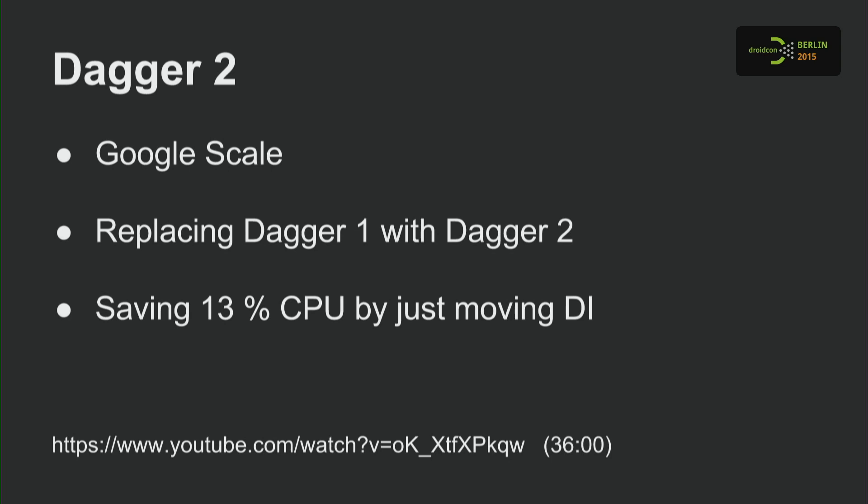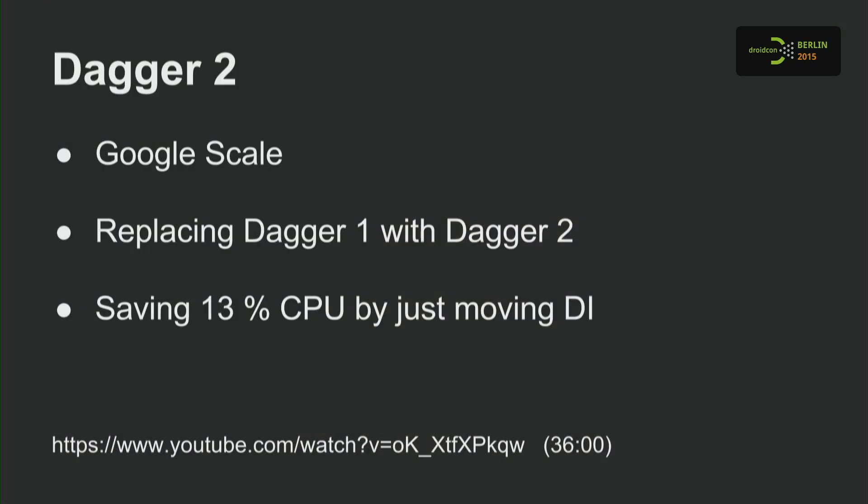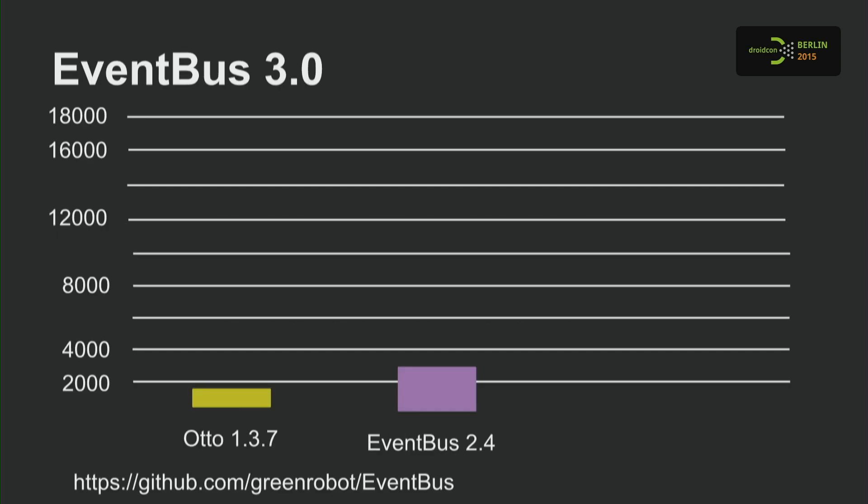Dagger — it's a dependency injection framework. There was Dagger 1, implemented by the guys at Square. It used annotation processing to generate code, but also used reflection at runtime to stitch the object graph together and handle some inheritance edge cases. Google used it internally at Google scale for dependency injection. By migrating to Dagger 2 — a fork of Dagger 1 — which is completely without reflection, they saved 13% of CPU time.